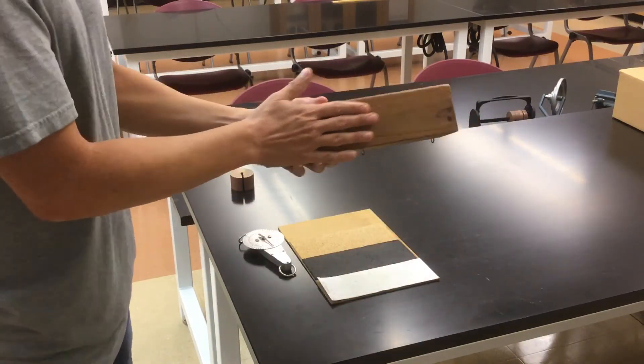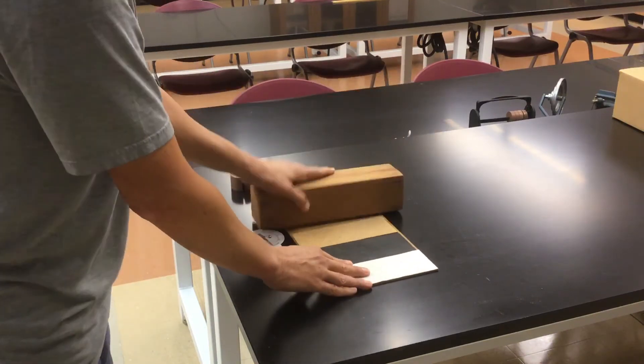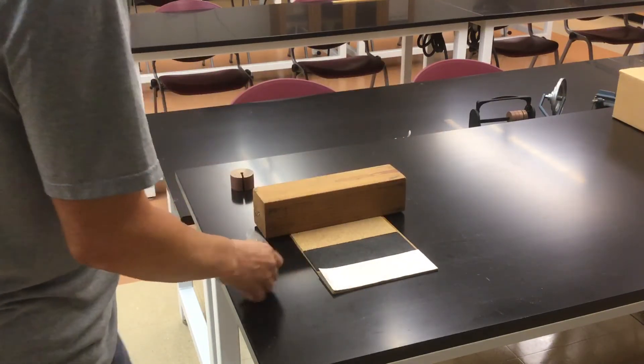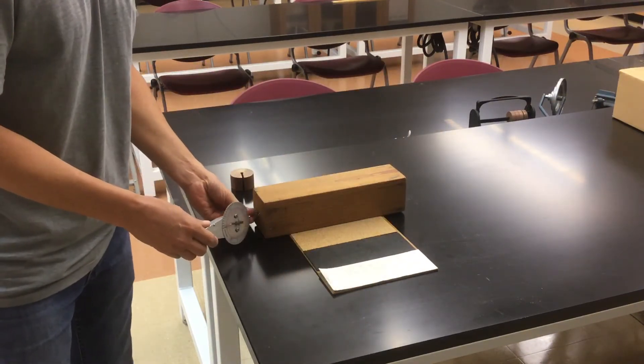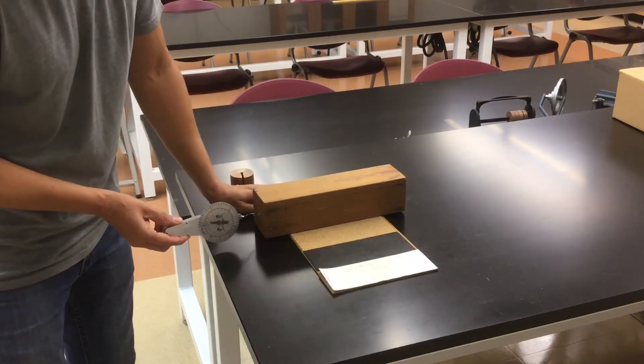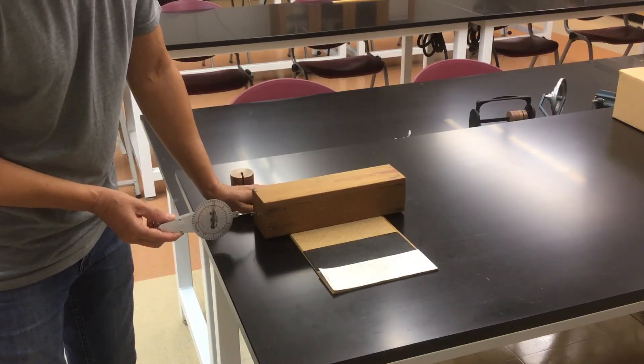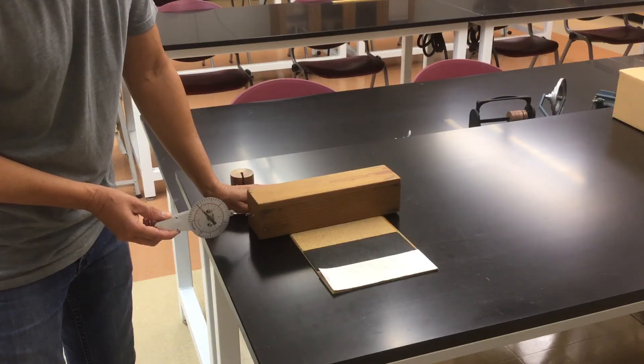So what's the coefficient of friction of wood on fiberboard? I put my scale on, give it a pull, and the maximum force of friction before it slides is about one and a half newtons.